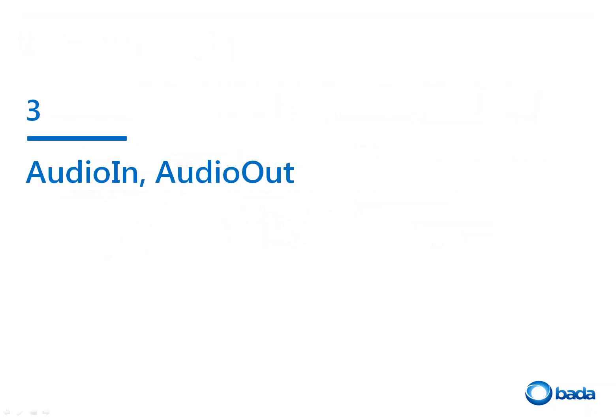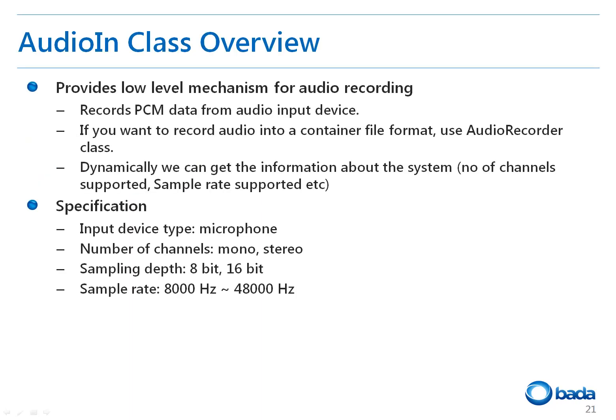The AudioIn and AudioOut classes provide mechanisms for recording and playing raw uncompressed pulse code modulated PCM data. The AudioIn class provides a mechanism to record audio at a low level. The AudioIn class saves the PCM audio data as-is, unlike the audio recorder which saves audio in a known file format. Developers have to manually create and specify a buffer. Multi-buffer and auto-switching between buffers is supported.